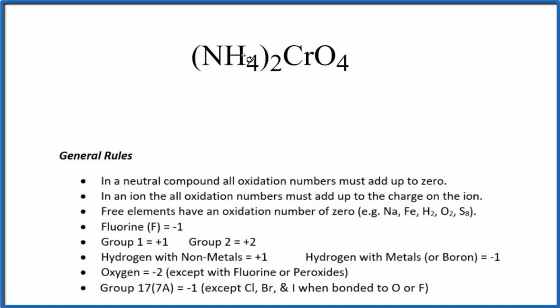We have the ammonium ion and the chromate ion. We have two ammonium ions actually, so we can look at these as separate ions and that'll help us figure out the oxidation numbers. Let's do the ammonium ion first.